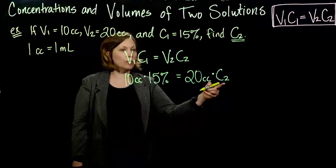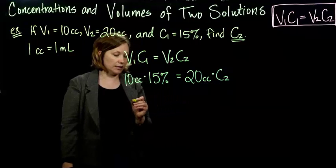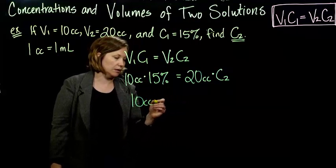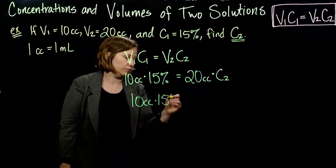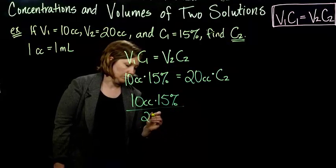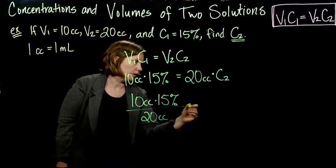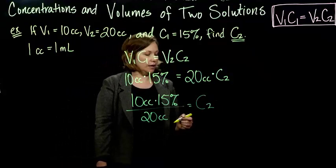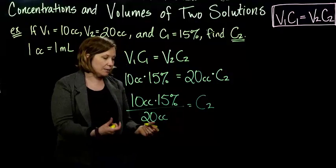So I need to get the C2 by itself, so I'm just going to divide on both sides by 20 cc's. Okay, there we go, it's solved, now I just have to simplify this.